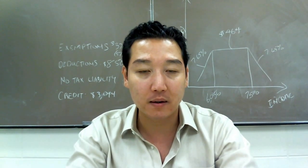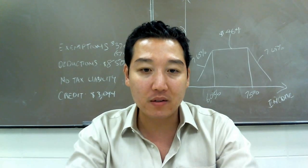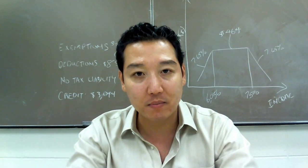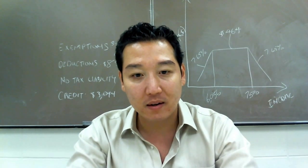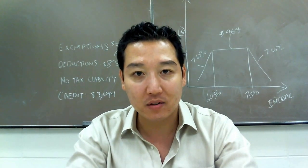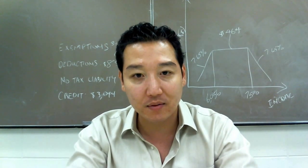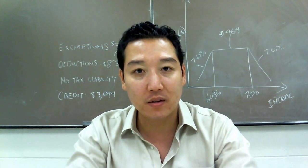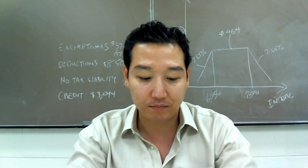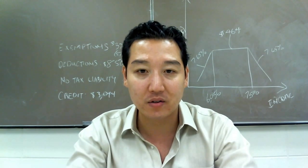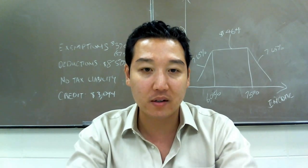Her tax liability is simply 10% of $5,250, which is $525. Her actual tax rate is 10%, since $525 is the amount she's paying in taxes. The marginal tax rate — the tax bracket she's in — is also 10%. So the actual and marginal tax rate for this low-income person are the same at 10%. Those are the answers to Exercise 2 in your slides.